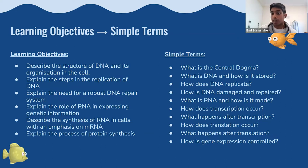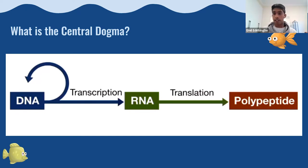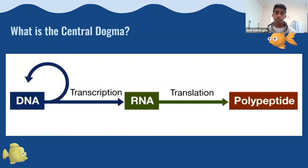Starting with the central dogma: the central dogma is essentially the process through which DNA is transcribed into RNA, which is then translated into proteins, which then conduct various functions in the body. When we talk about the central dogma, we're referring to this process and all of the in-between processes — how DNA actually goes from DNA to RNA and how RNA creates a polypeptide.